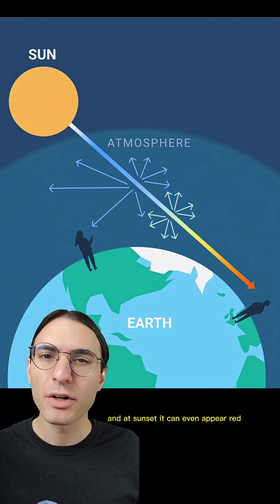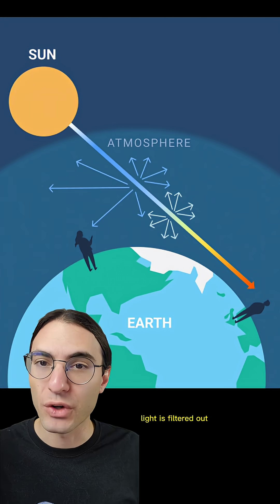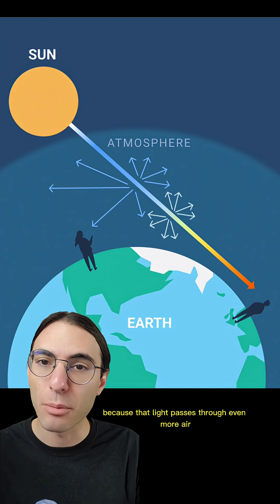And at sunset, it can even appear red because so much of the high frequency light is filtered out because that light passes through even more air.